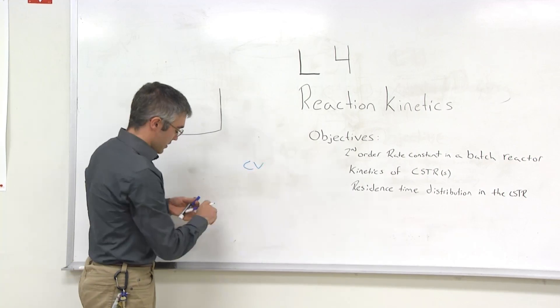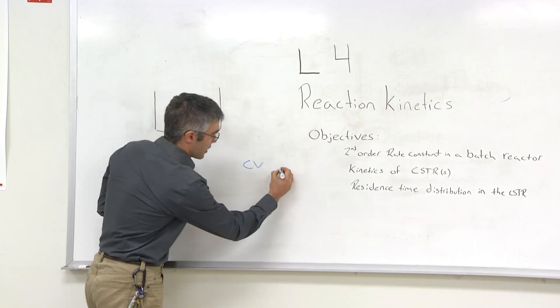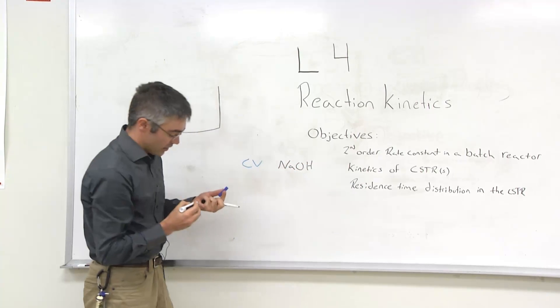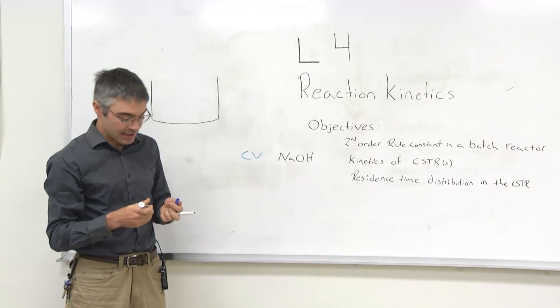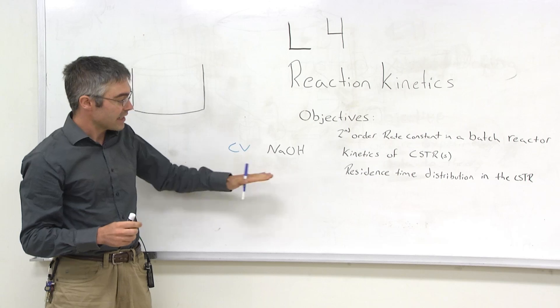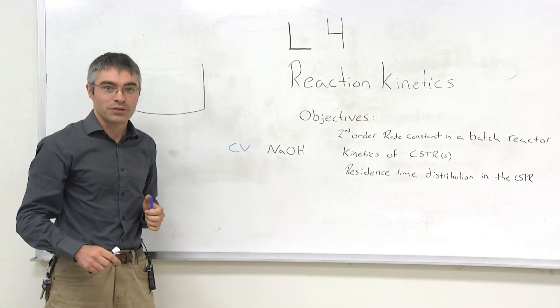When combined, the crystal violet and the sodium hydroxide will react to form a colorless product. This is a second order reaction, and you'll be determining the rate constant using the method of excess, or a pseudo first order reaction.